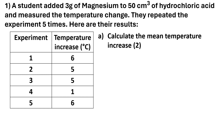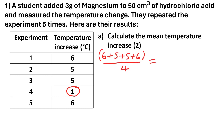If it's a 2-mark calculation for a mean, it usually means we've got to spot an anomaly and leave it out of our calculations. We can see that experiment 4 is an anomaly, so we're going to work with the four good results. We do 6 plus 5 plus 5 plus 6 and divide by 4. The answer is 5.5 degrees C.